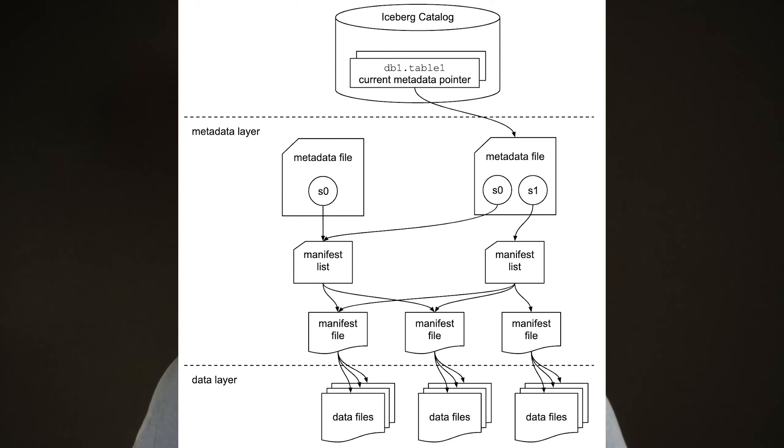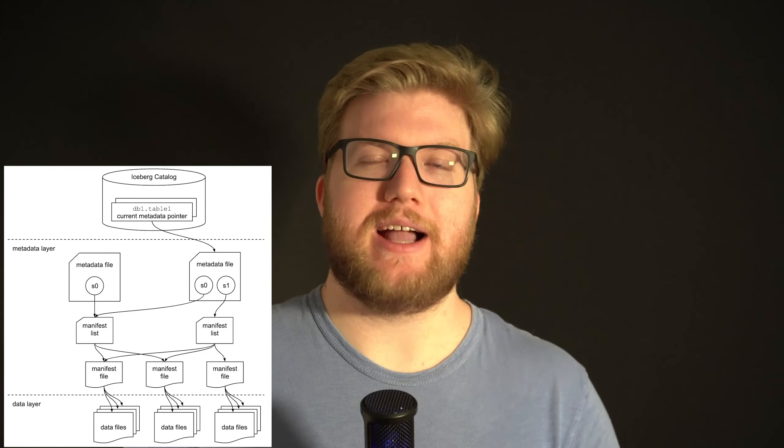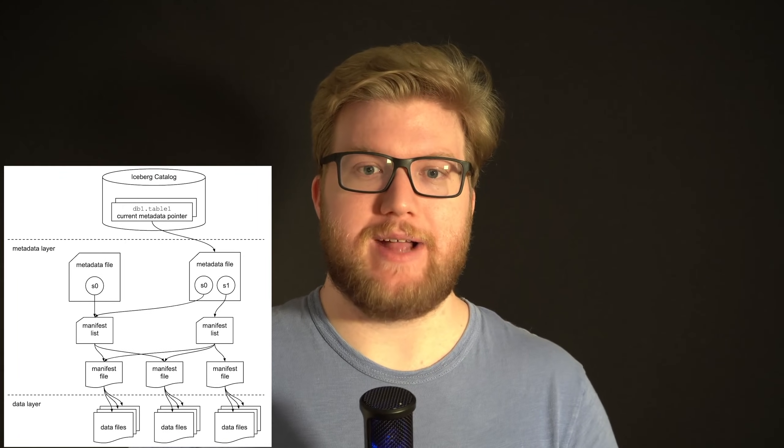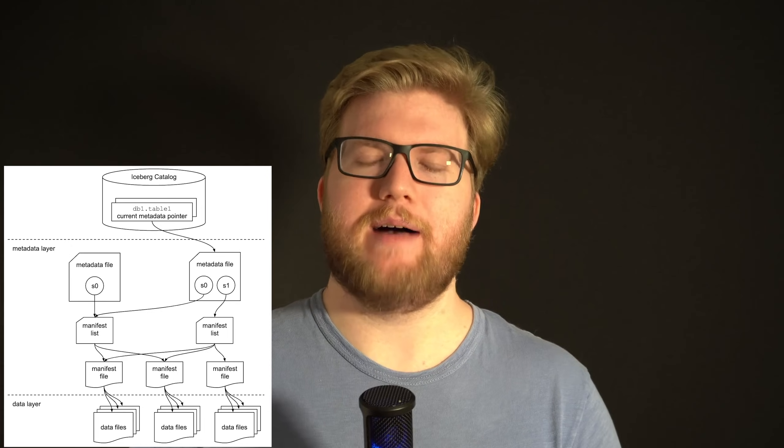Instead of sorting tables into individual directories, Iceberg maintains lists of files. Metadata files keep track of table state, and manifest files are tracked in manifest lists that store metadata about the manifest. Iceberg supports time travel via snapshots of the table in the past, which can be accessed by a manifest list pointing to manifest files representing an older version of the table. On top of that, the format re-uses manifest files when it can for files that remain constant across multiple snapshots. Otherwise, every single transaction is stored, tracked, and able to be accessed as part of a given snapshot.